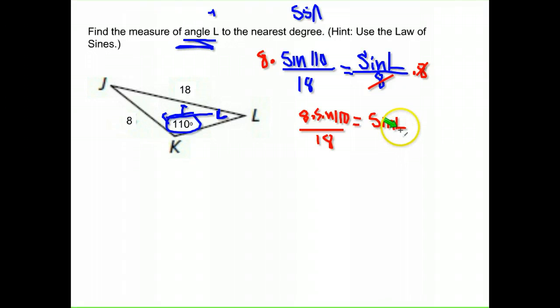So now we have that the sine of L is equal to 8 times the sine of 110 all over 18. We need to get rid of this sine that's attached to our angle. So remember when you're trying to find angle measure, you use inverses. So we are going to use inverse sine, and what that will do is effectively cancel our sine. Whatever you do on one side though, you have to do on the other. So we're going to do the inverse sine of whatever number we get when we calculate all of that in parentheses.